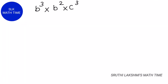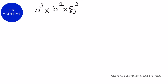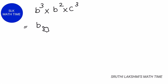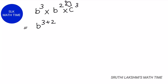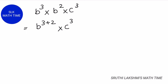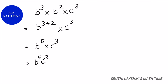Let's see another example: B power 3 into B power 2 into C power 3. Here the first two terms have the same base, which is B, while C power 3 has a different base. So we only add the exponents that have the base B: 3 plus 2 equals 5. We bring down C power 3 as it is. So the answer is B power 5 into C power 3.